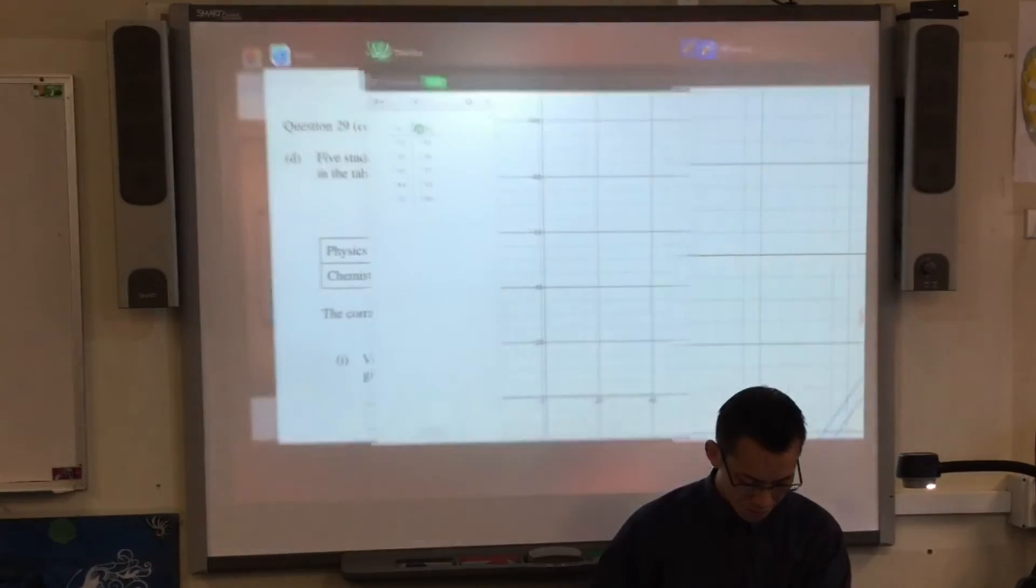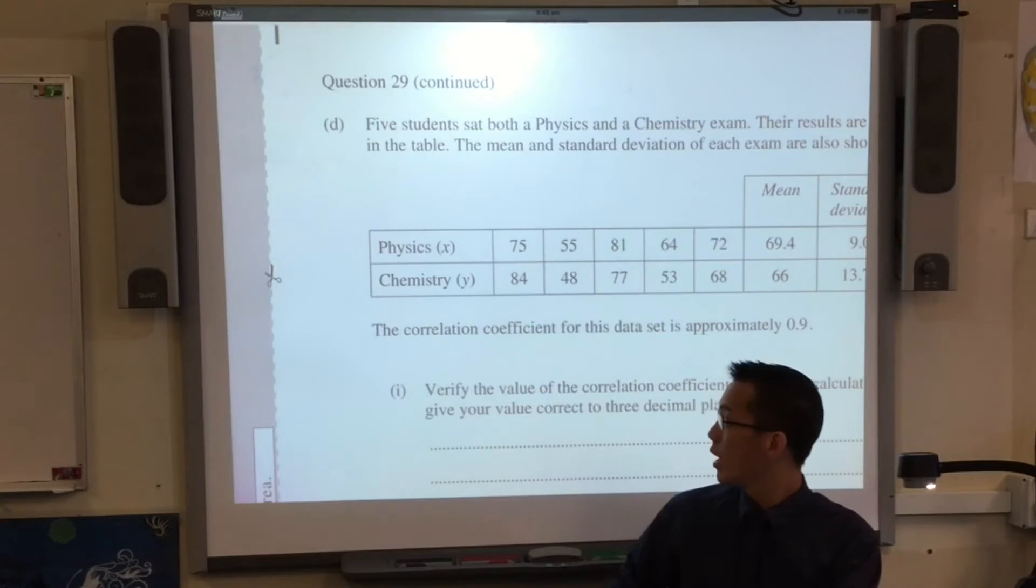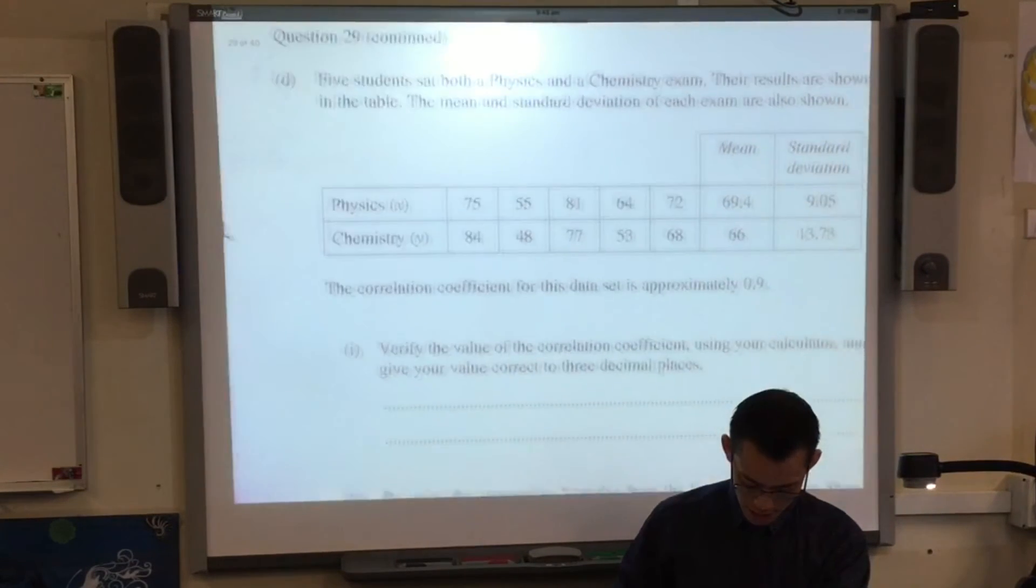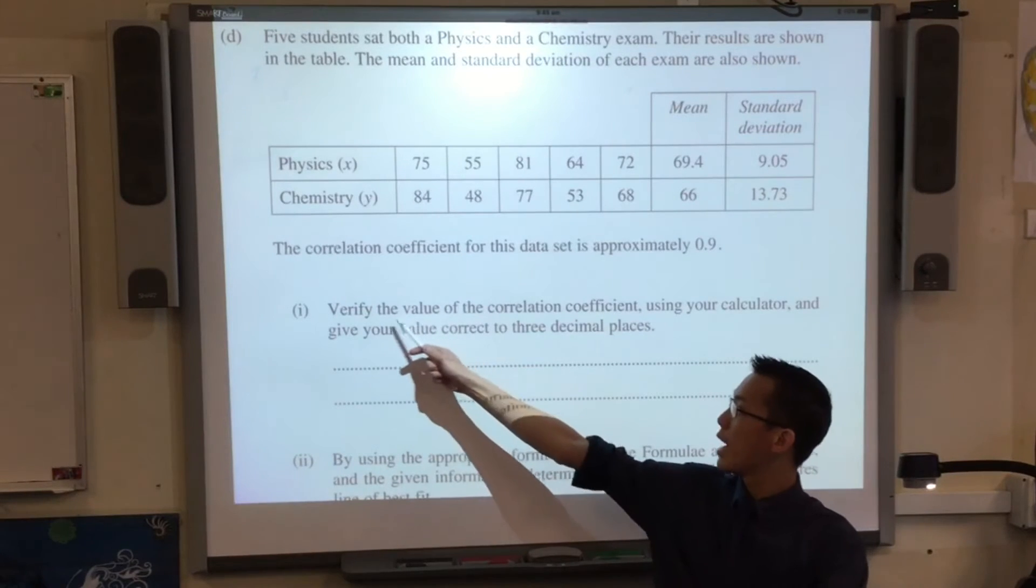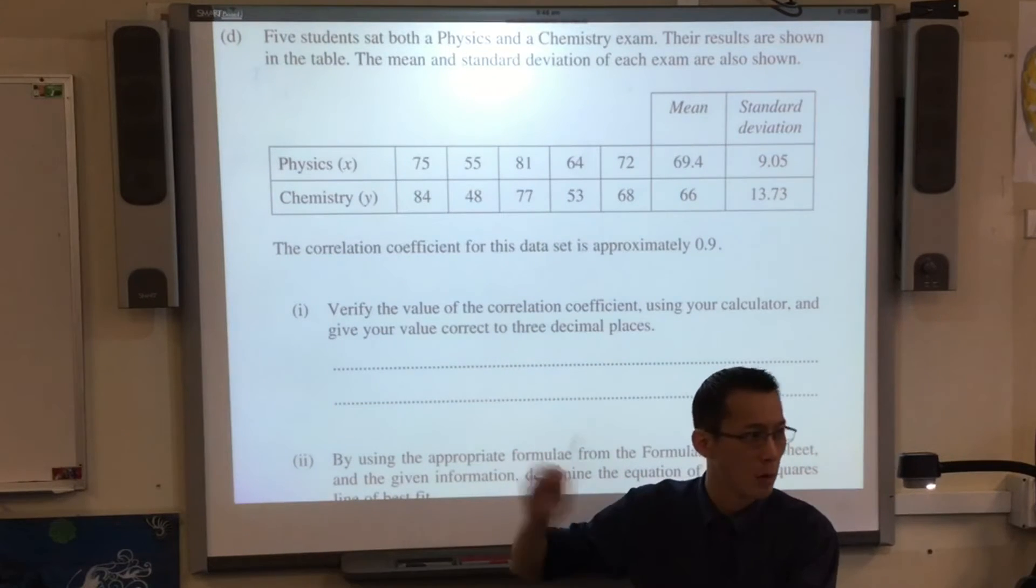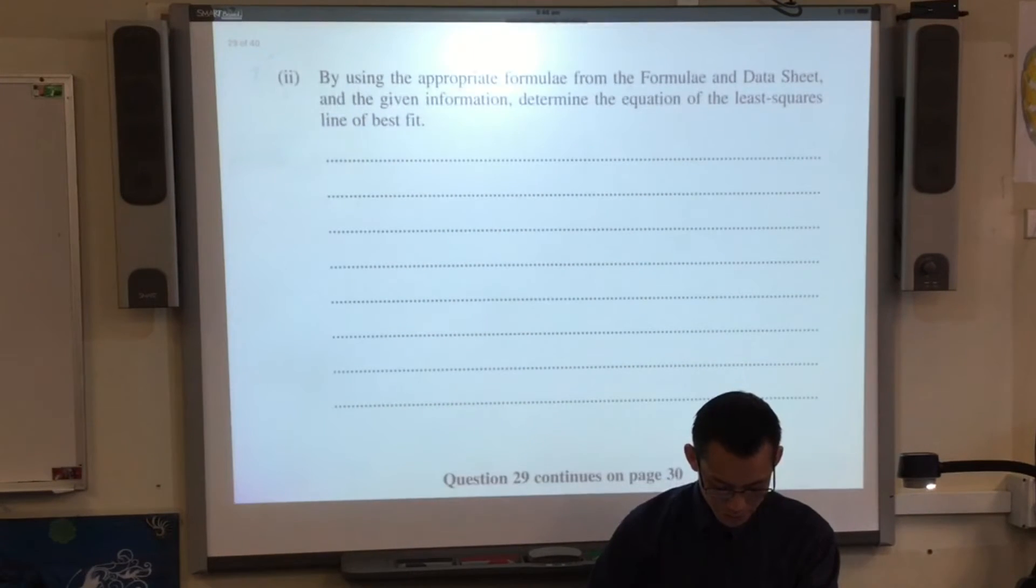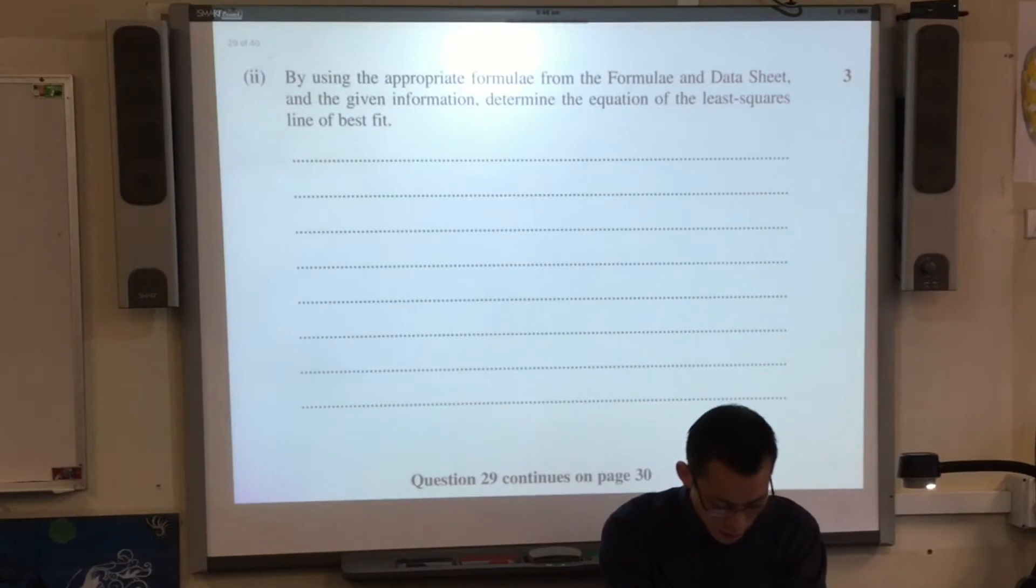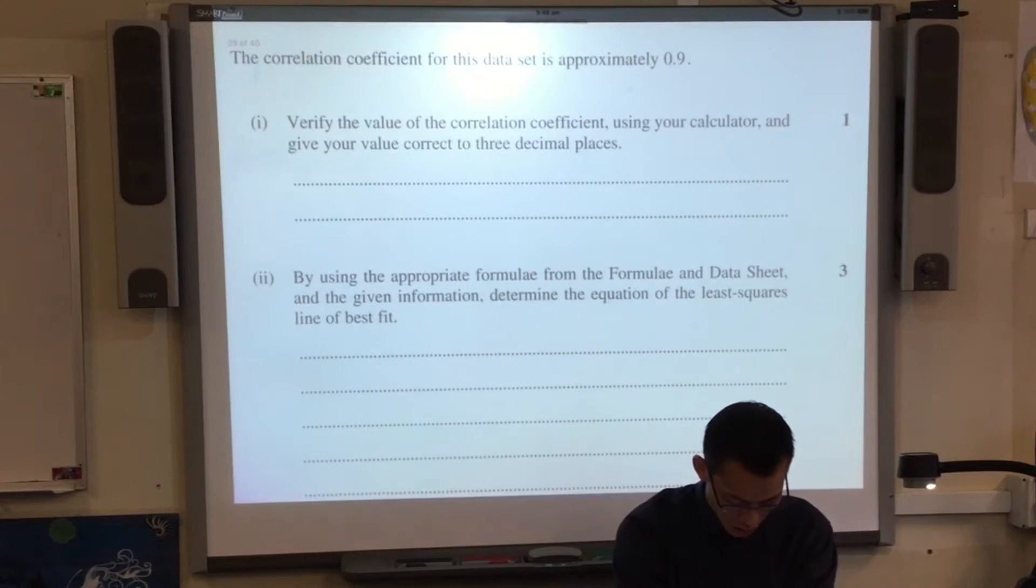Let me show you what I mean. Remember that HSC question we pulled this data out of? This is what I showed you. The first thing I said was, we're going to have to use our calculator, press the buttons, put all that data in, and we're going to have to verify this 0.907, or whatever it was. You've got to do that, but now if I scroll just a little bit, it says, by using the appropriate formula from the formula and data sheet and the given information, you know, all that data, determine the equation of the least squares line of best fit.